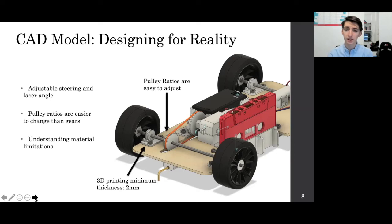One of these features was the use of pulleys rather than gears, as changing ratios is easier with pulleys than gears, allowing for the physical model to be adjusted to improve performance. Another example is using part thicknesses that are suitable for the material and method of manufacture.